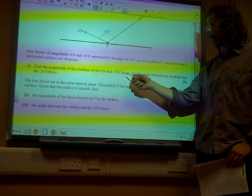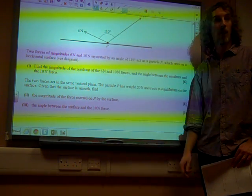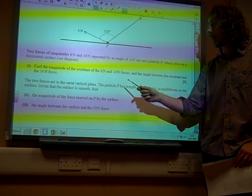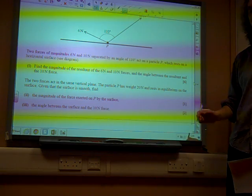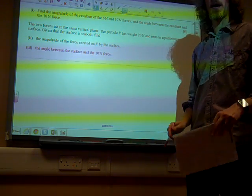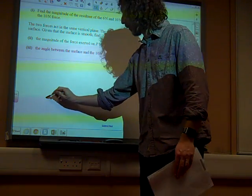At this point, the question doesn't care about the table. It doesn't care what angle these are at. The only thing that the question is interested in is the 6 newton and the 10 newton force. I feel I want to redraw them in a way that will help me. All I'm interested in are those two forces, so let me just draw those two forces.